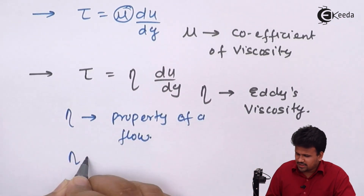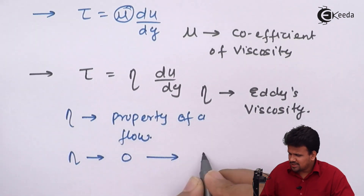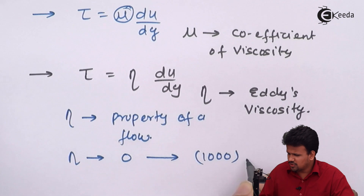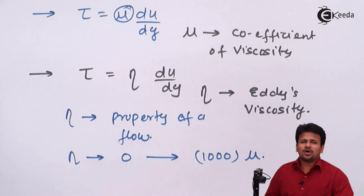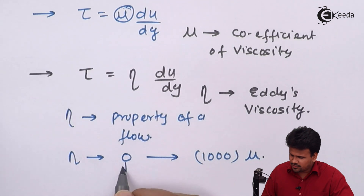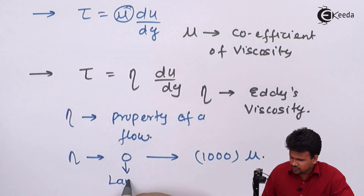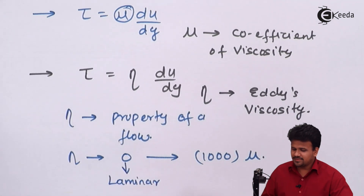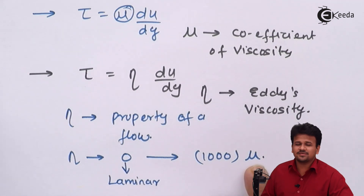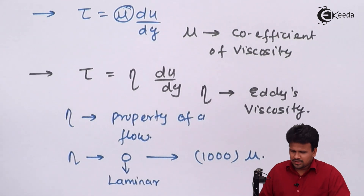Eddy viscosity will change from 0 to 1000 times the value of mu. If eddy viscosity is 0, then the flow is said to be laminar flow. And if it becomes a thousand times the normal coefficient of viscosity, then it will be a turbulent flow.